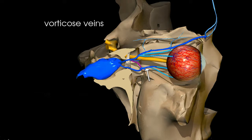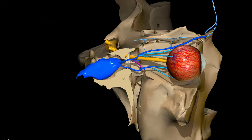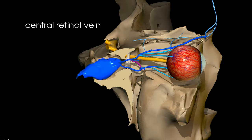The ophthalmic veins then drain into the cavernous sinus, which you can see here situated within the sphenoid bone, just lateral to the sella turcica. In addition to these veins, there is also a central retinal vein, which you can see here — this accompanies the central retinal artery.